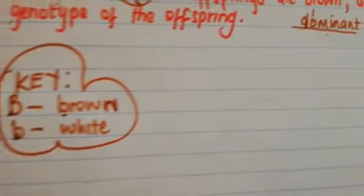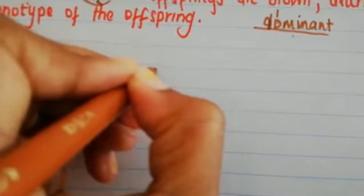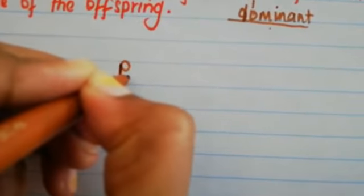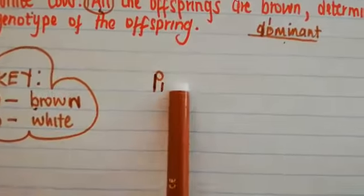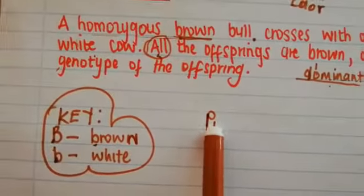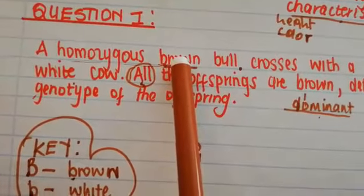And then let's go and now develop the diagram. So firstly, you need to write P1. P1 represents the parents. So we said that we have a homozygous brown bull. This is parent number one.